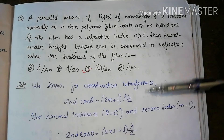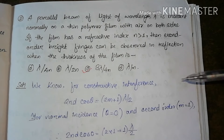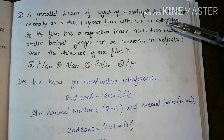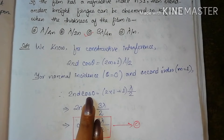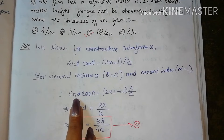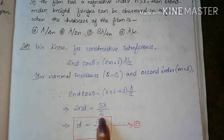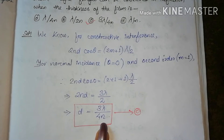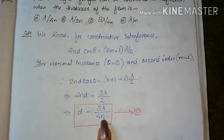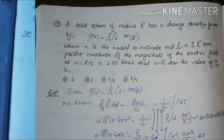For normal incidence, θ equals 0, and for second order, m equals 1. Substituting these values: 2nd·cos0 = (2×1+1)·λ/2, which gives 2nd = 3λ/2, so d = 3λ/(4n). The correct option is option D: when the thickness of the film is 3λ/(4n), we can observe the second-order bright fringes, given the refractive index is greater than 1.